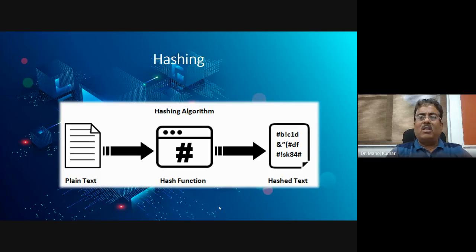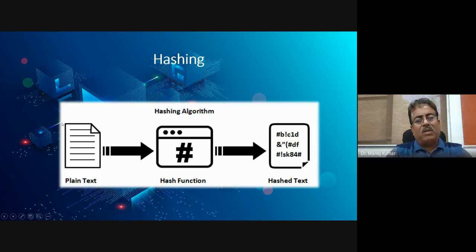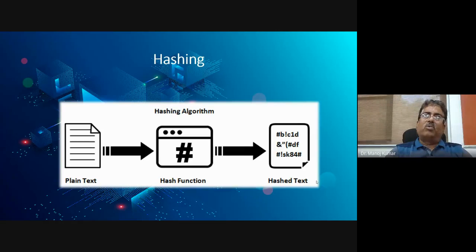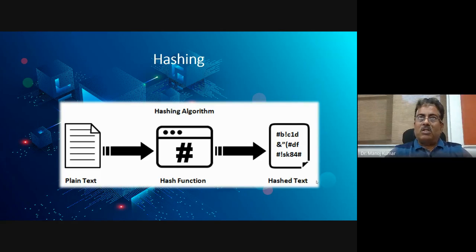Hashing is simply a mathematical function that converts plain text — which may be very long or very short, one bit or billions of bits — into a hash value. The hash value is a fixed-size number; for example, if we need a 128-bit hash, the output will be 128 bits. Why 128 or 256 bits? That is related to security, which I'll discuss.